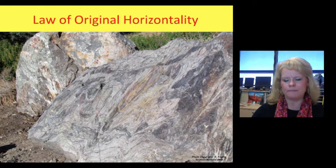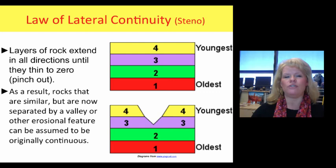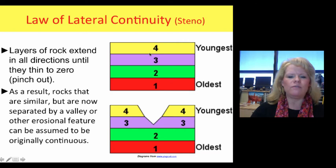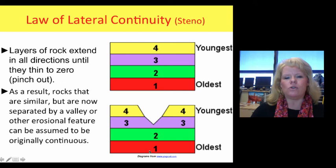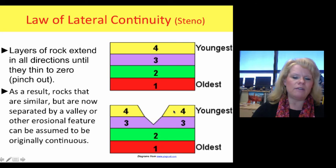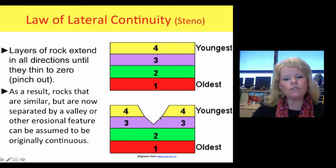The law of lateral continuity — also a Steno principle. Remember layers one, two, three, and four: one is the oldest by superposition, and they were all laid down flat by original horizontality. We get some down-cutting by a river — let's call this the Colorado River and the Grand Canyon. The bottom layers are the oldest, some billions of years old, the youngest several hundred million years old. Layers three and four on either side of the canyon wall are the same layer — all we did was erode some away. They've just been separated by air now. That's one part of lateral continuity.